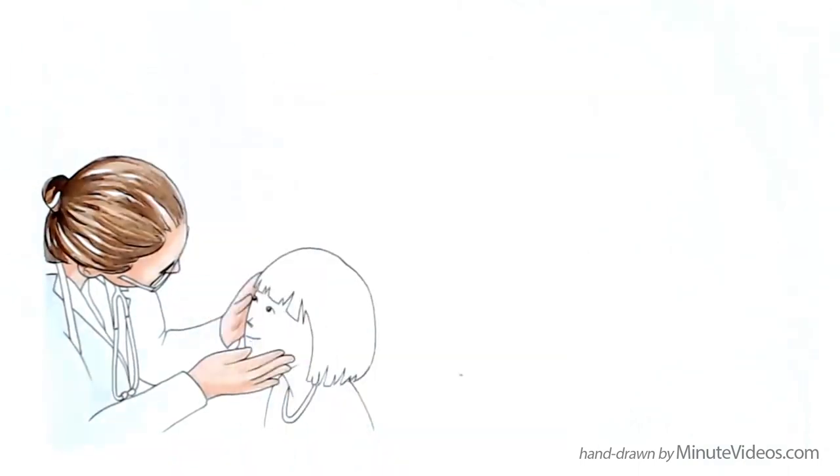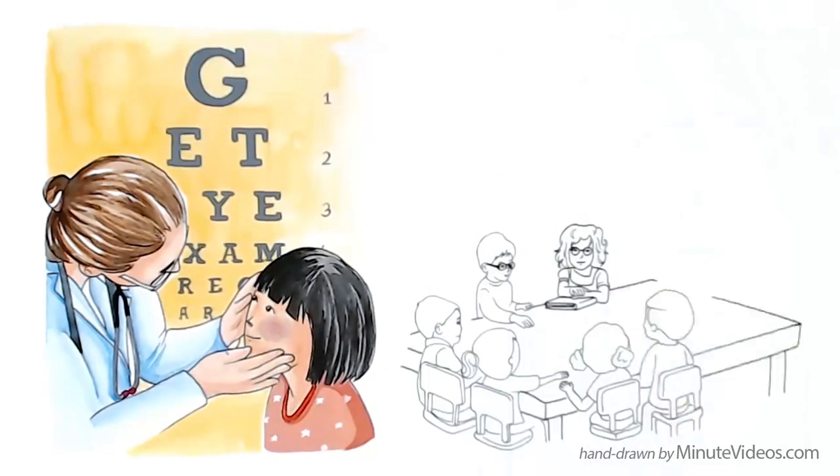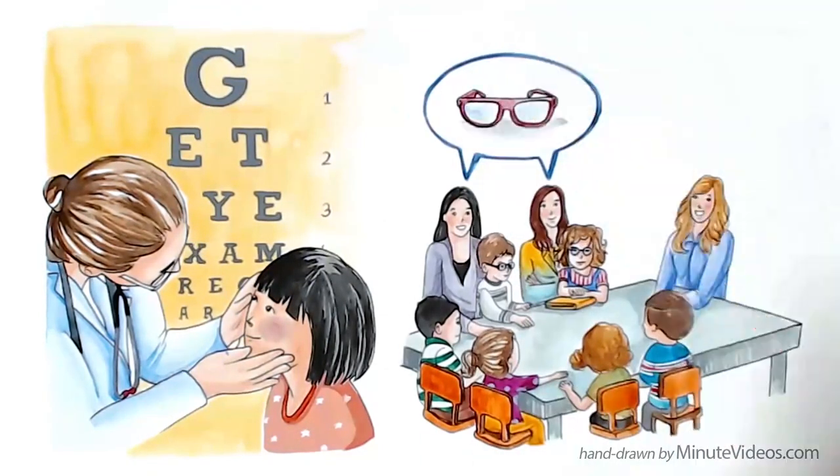That's why all kids should have a professional eye check every one to two years. If that cannot be provided, it's important for parents and teachers to learn how to detect a condition.